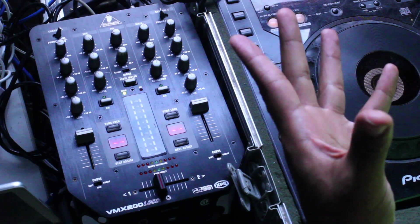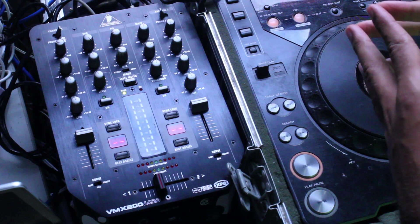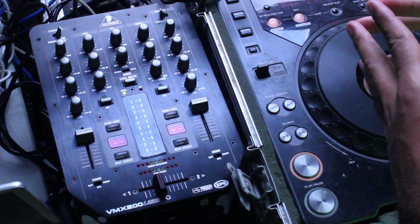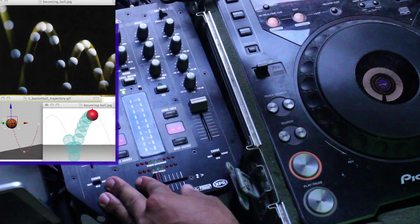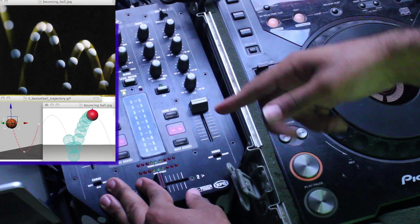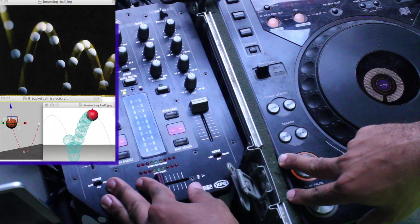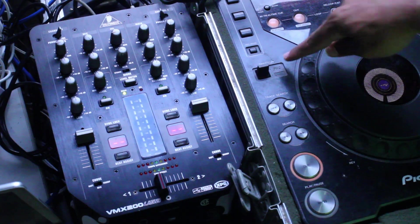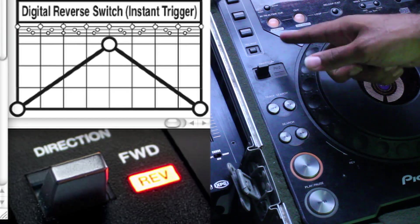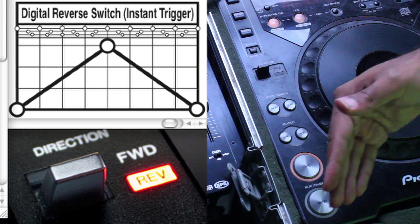But in fact, as far as physics is concerned, the laws of physics say there's no way that one can change directions instantaneously. That's impossible. The only way to do that is to use this switch, which is a reverse toggle switch — you hit that switch and the thing reverses automatically.